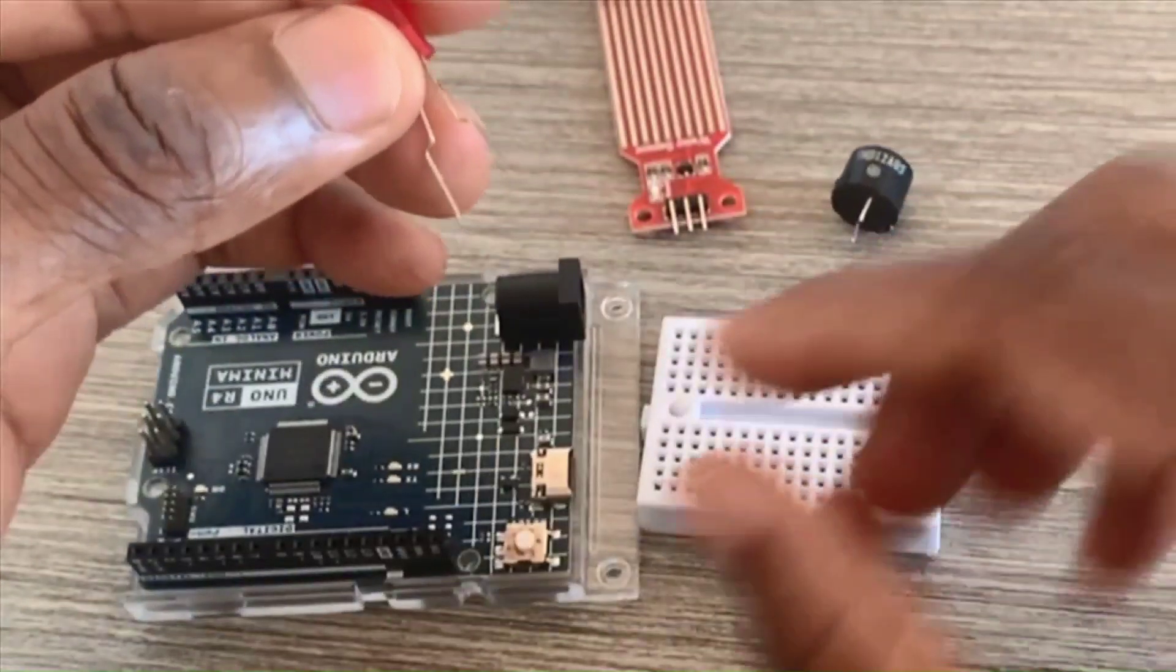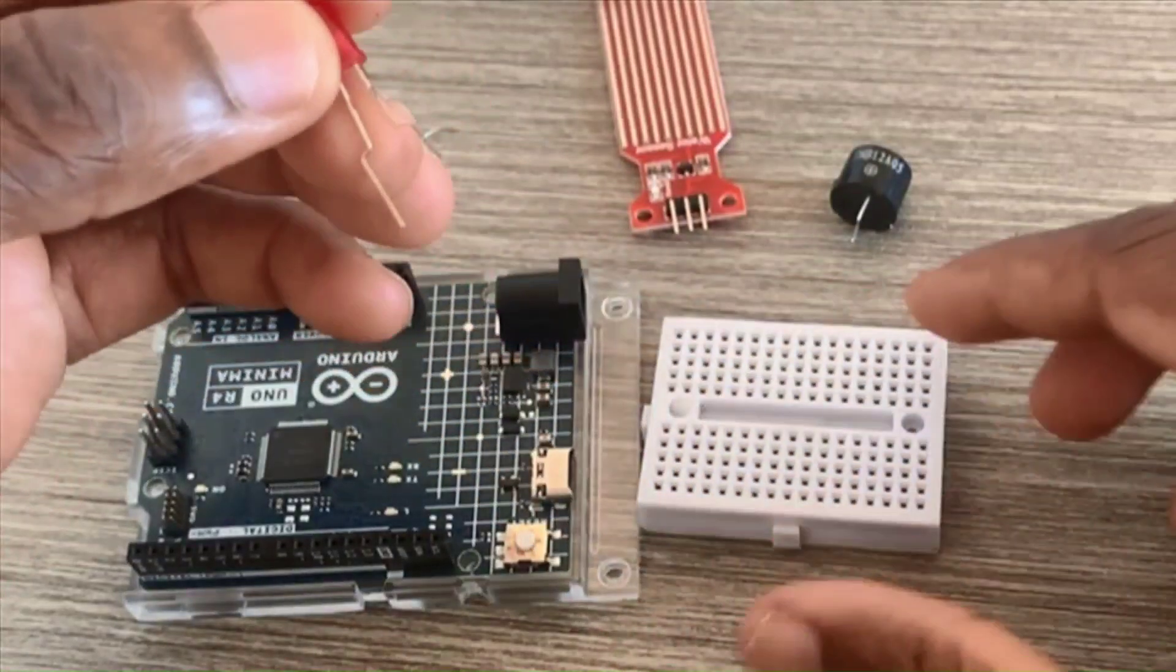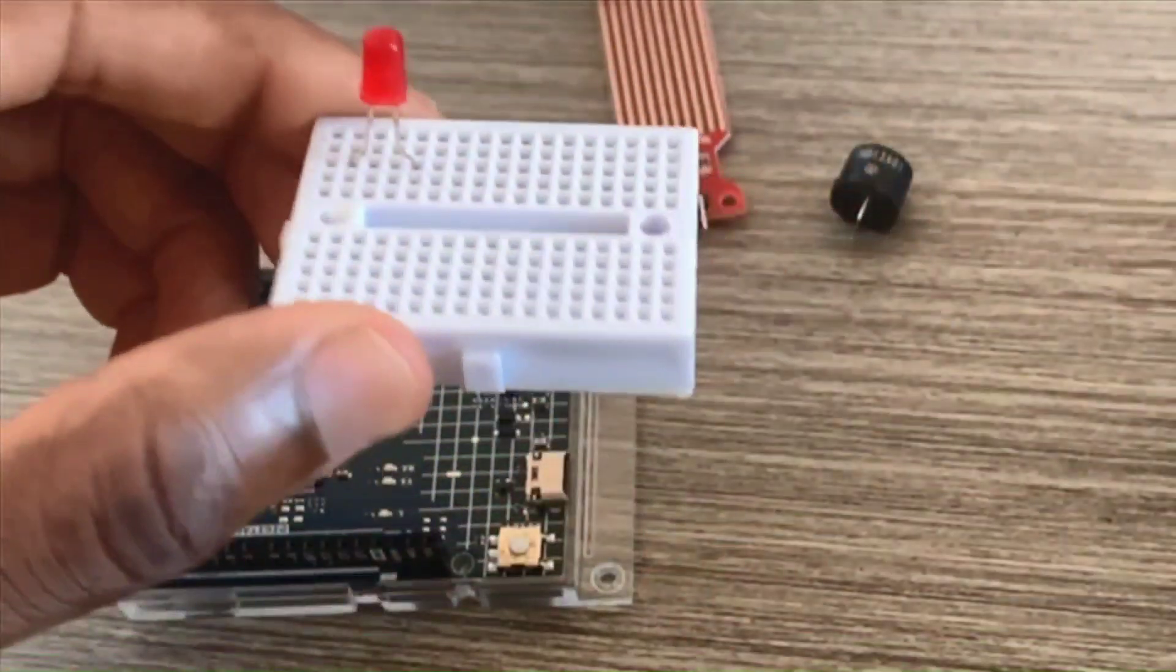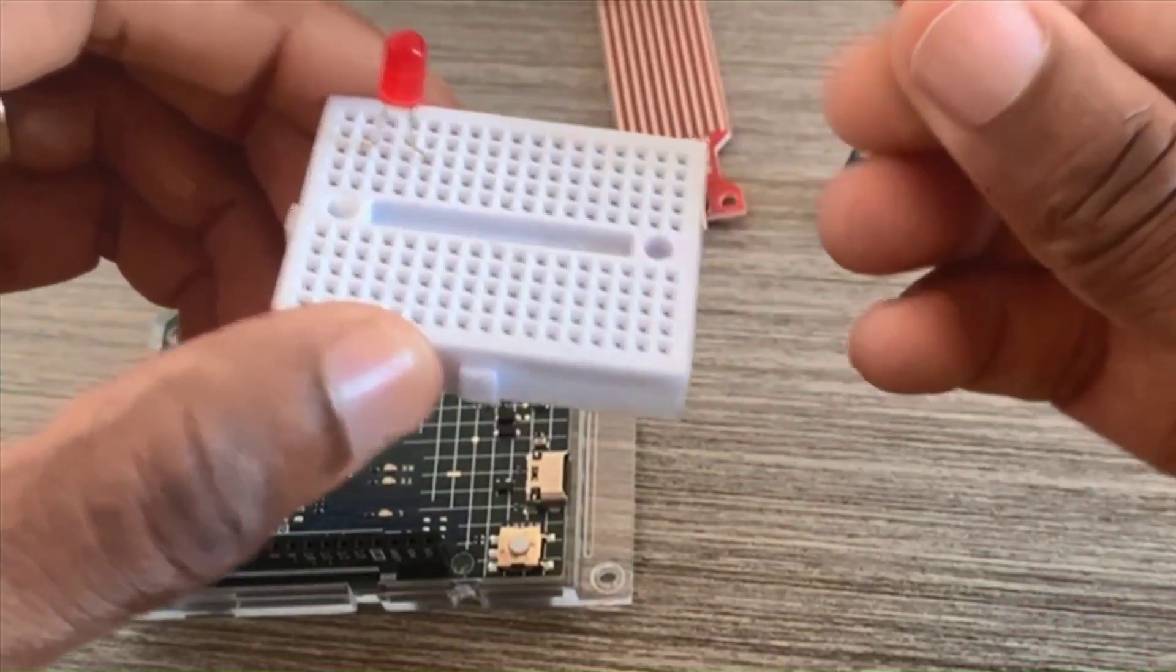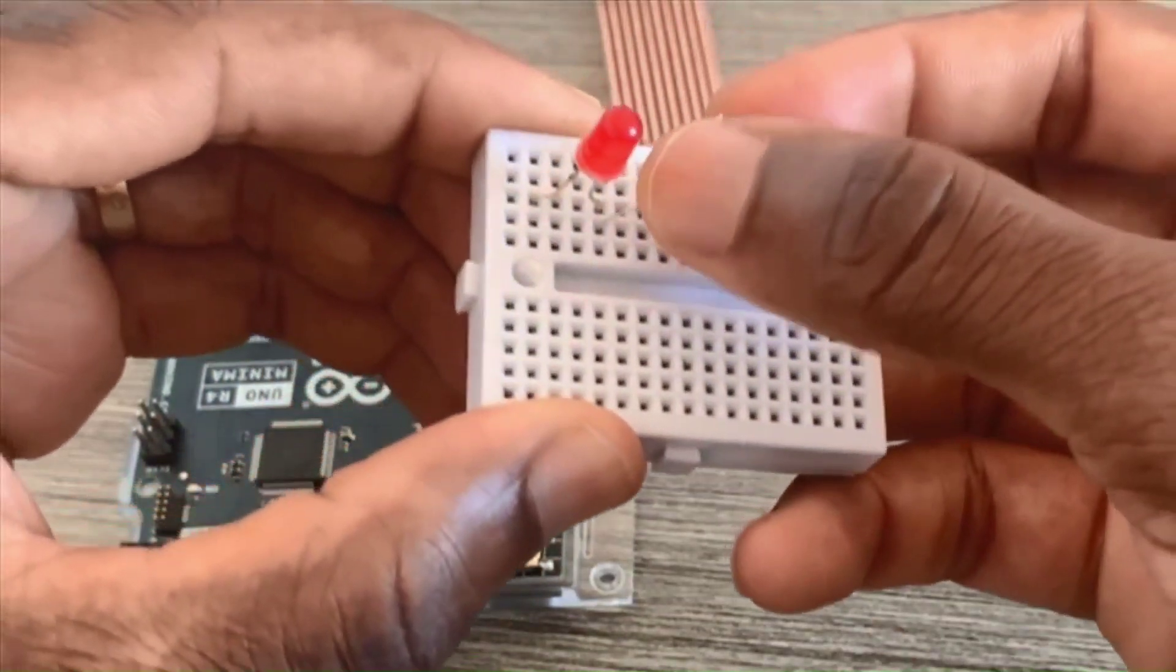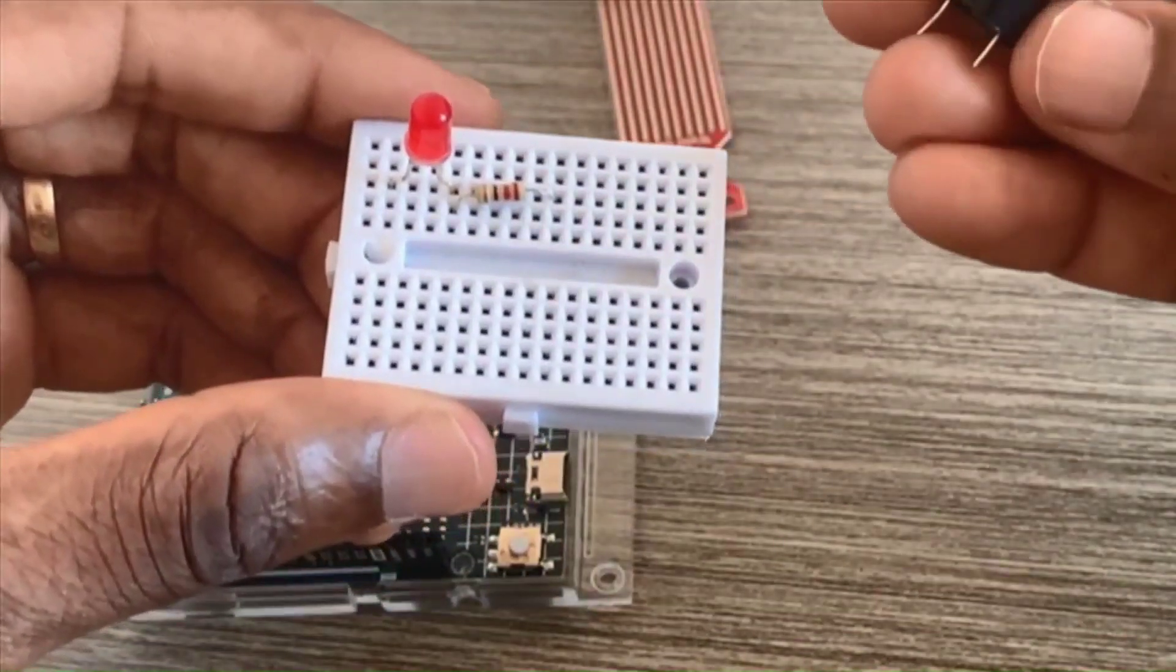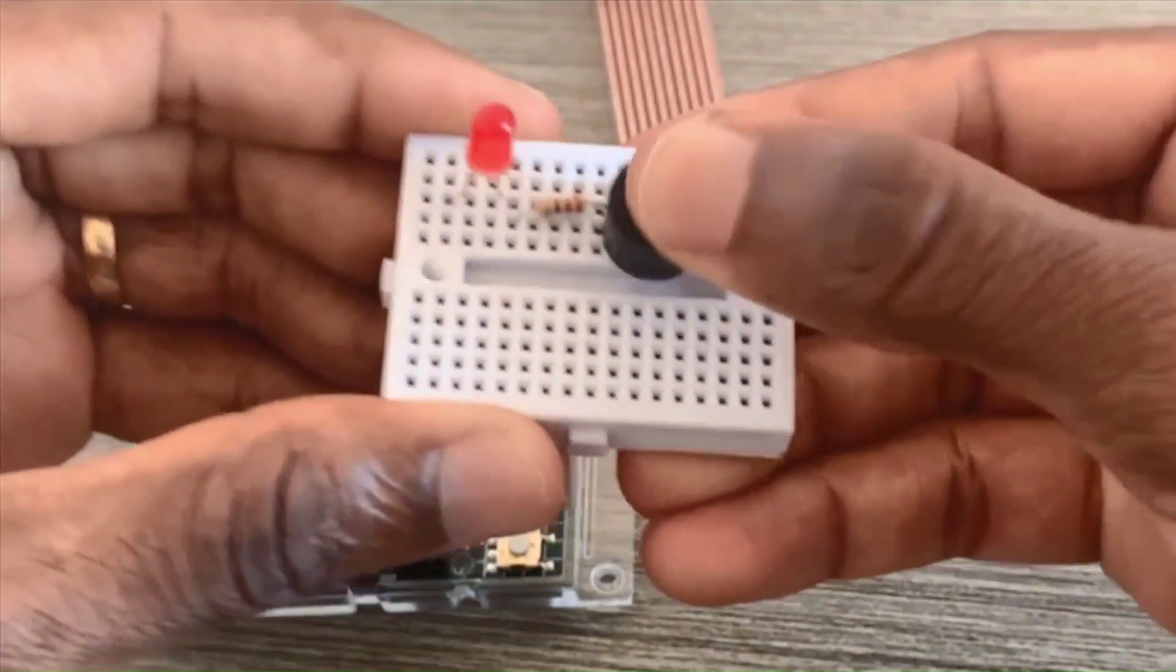That's the anode and this one is the cathode. So we put the LED on this side of the breadboard. We've got to protect the LED, so we are using this 200 ohm resistor. Moving forward, I put the buzzer on this side of the breadboard.